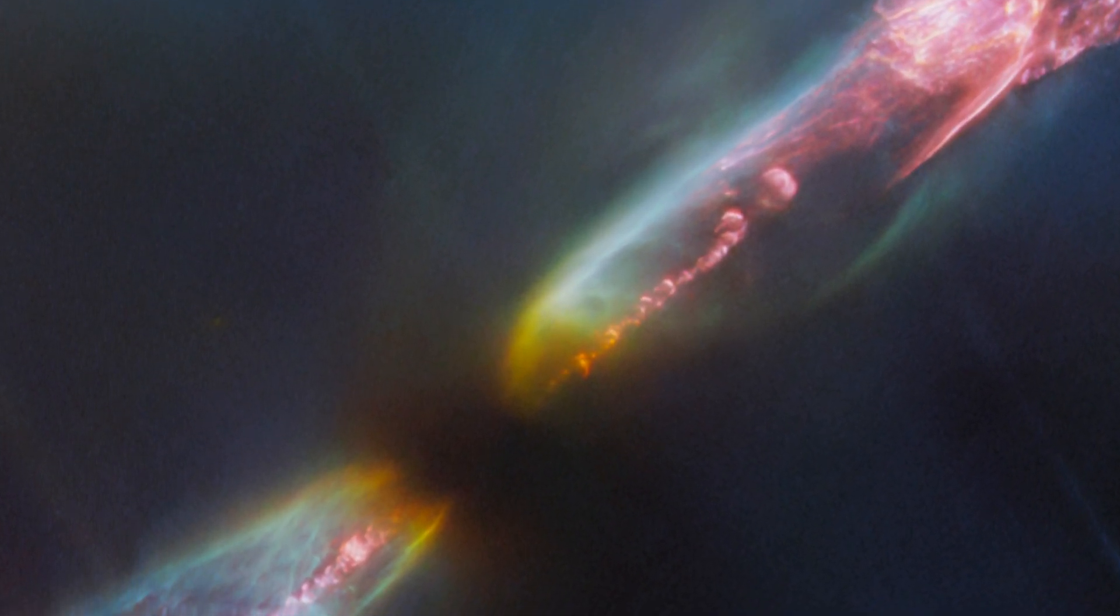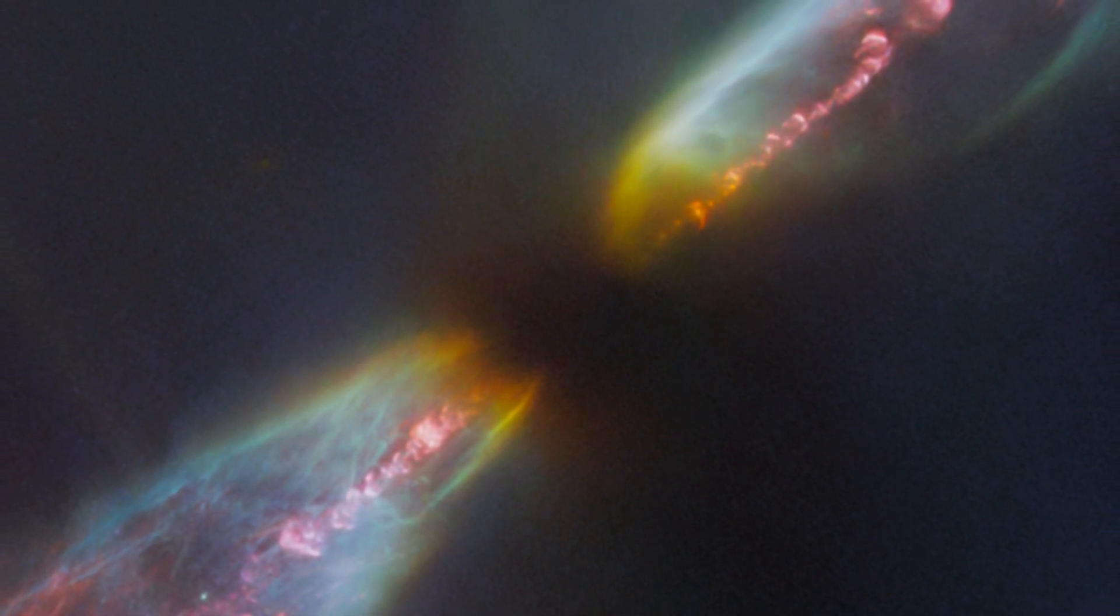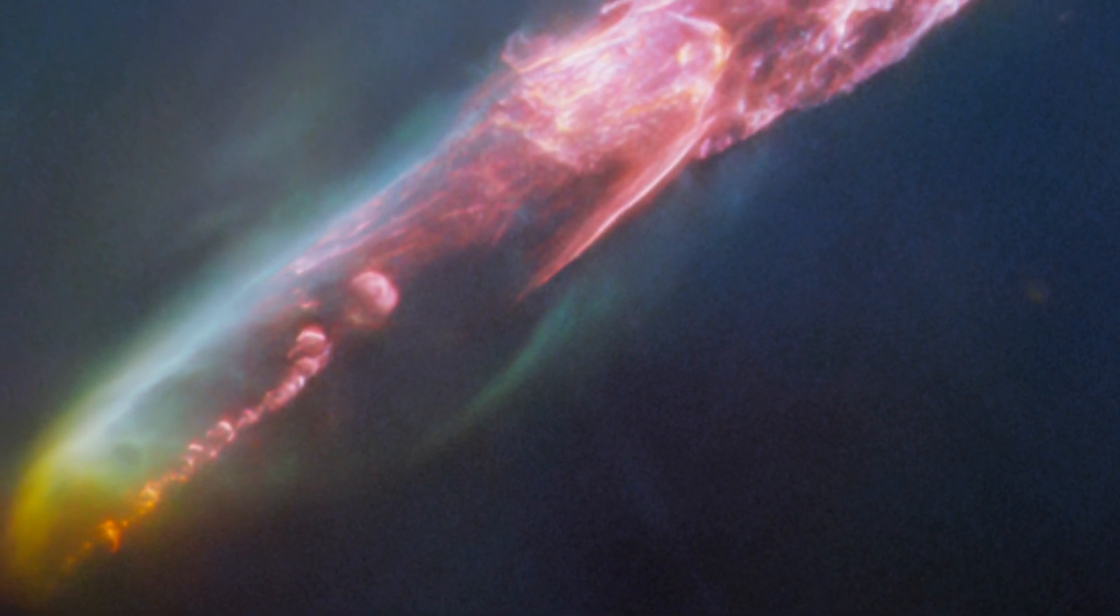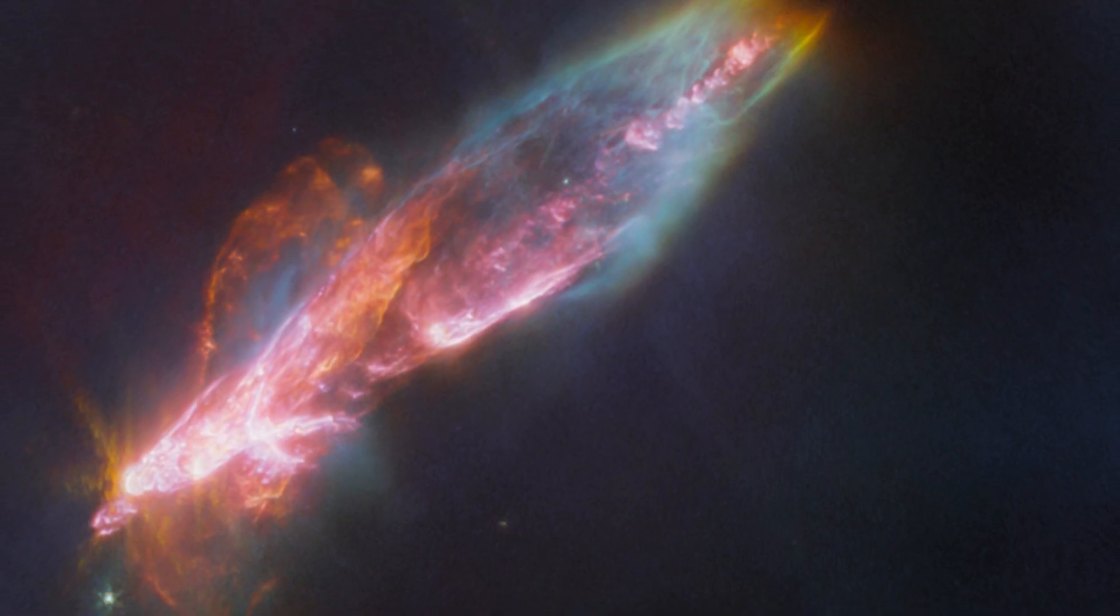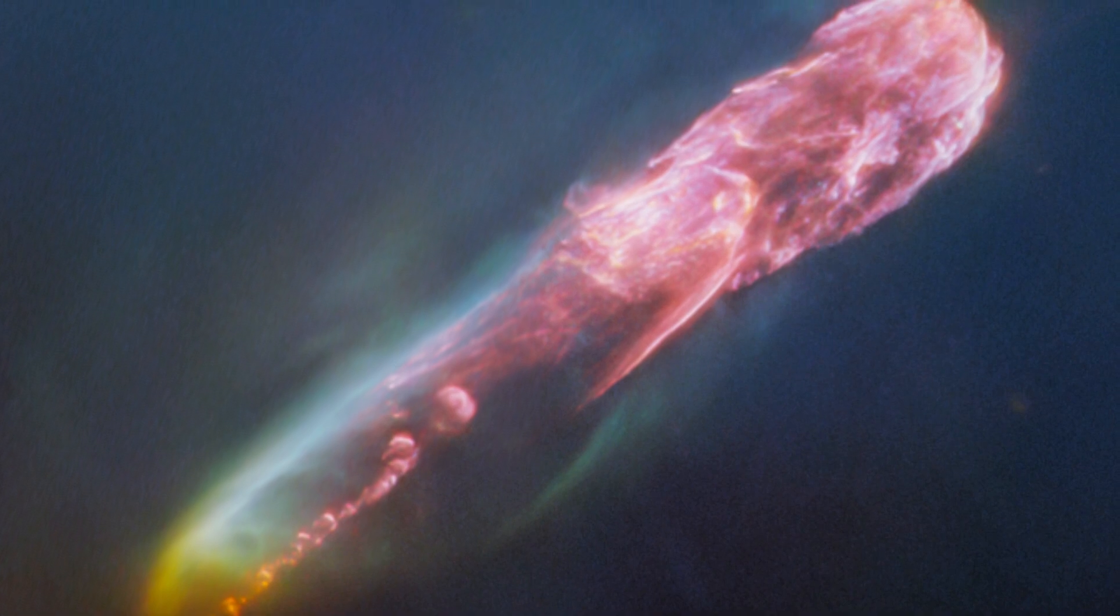Protostars are usually hidden by the gas and dust of the molecular cloud they formed from, but Webb's infrared vision can see through the veil and reveal their secrets. The image shows the star's dark center, where it is still gathering mass from its surroundings, and a bright region around it, where jets of gas shoot out from the star's poles at supersonic speeds. The jets collide with the surrounding gas and dust, creating shock waves that light up the colorful outflows we see in shades of blue and pink.